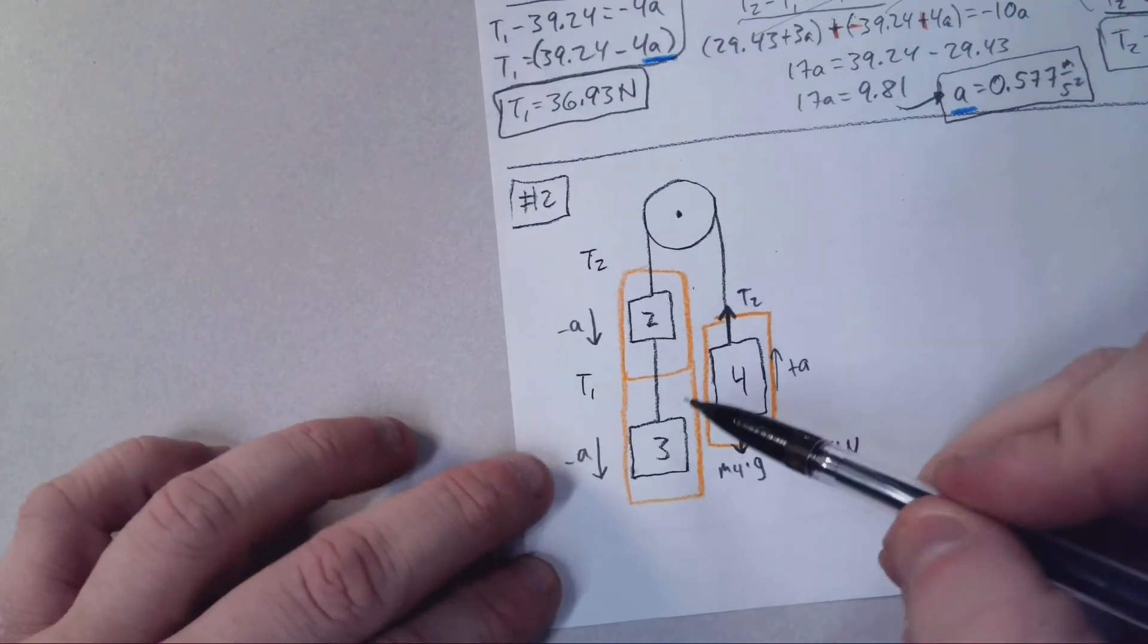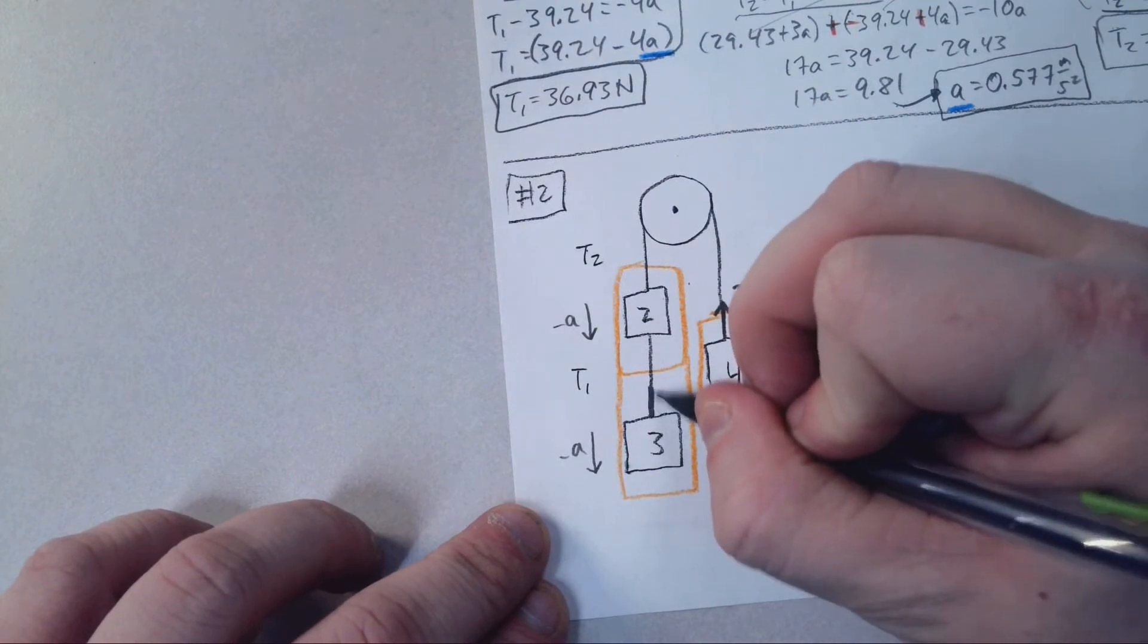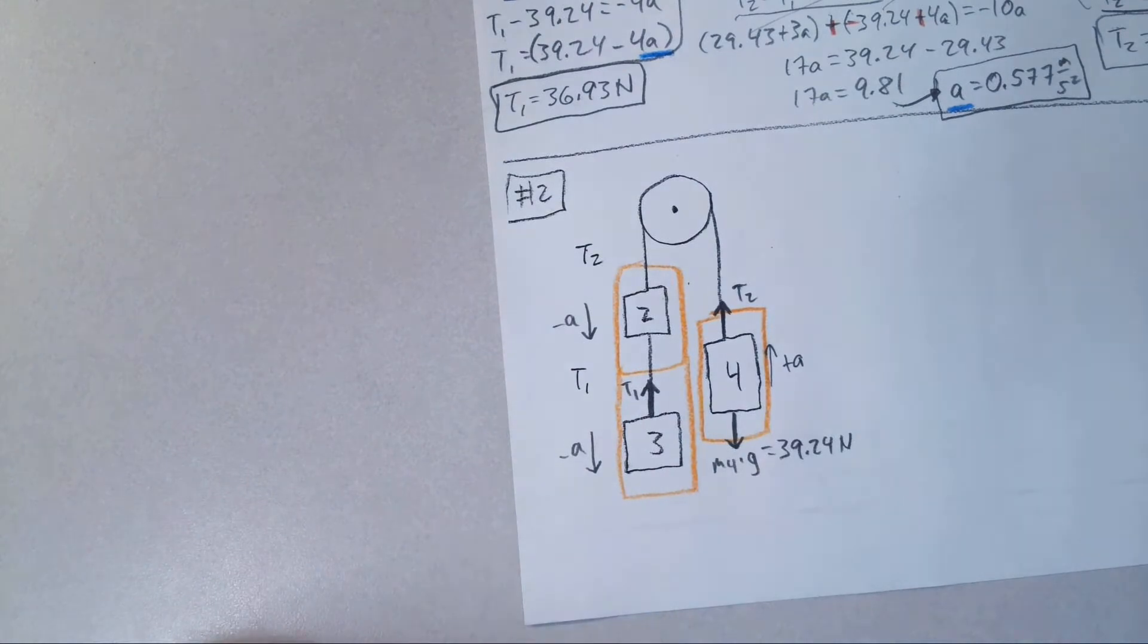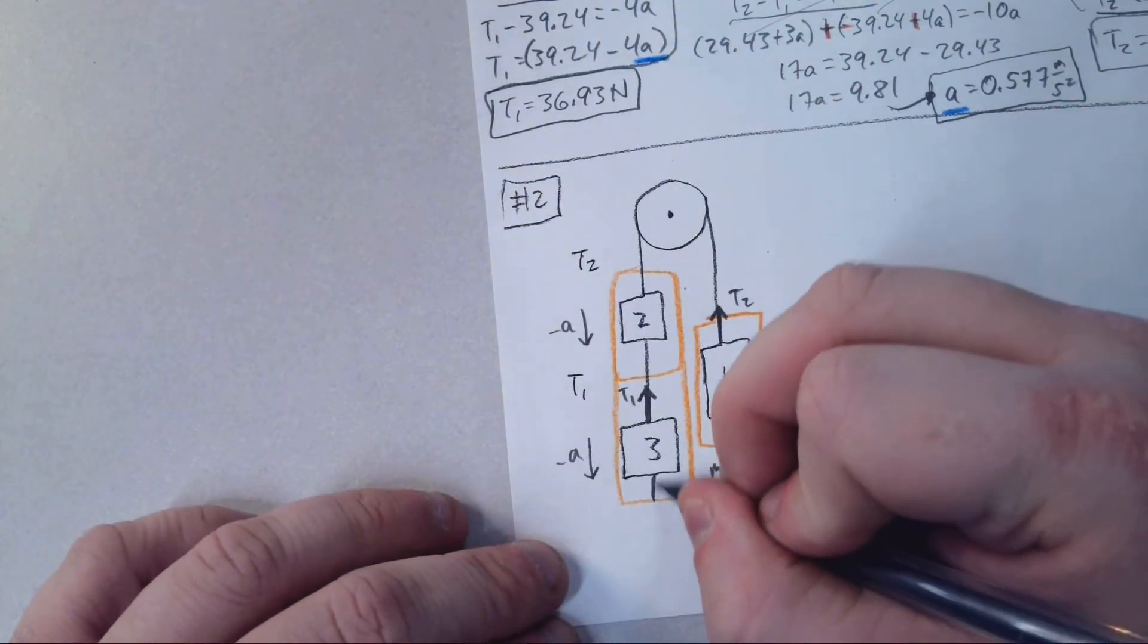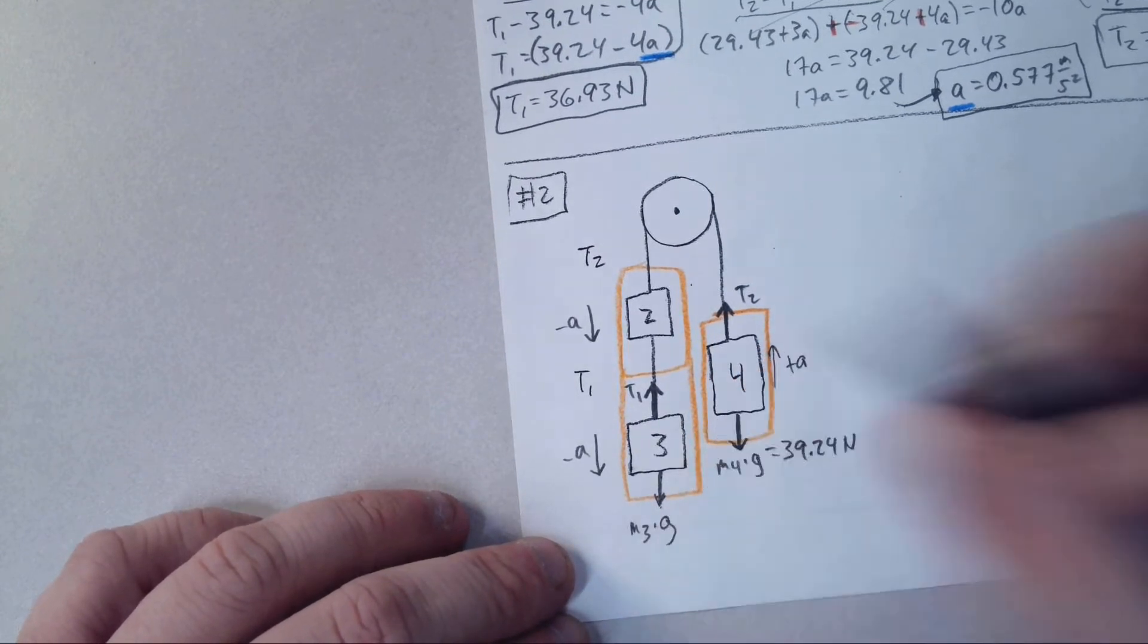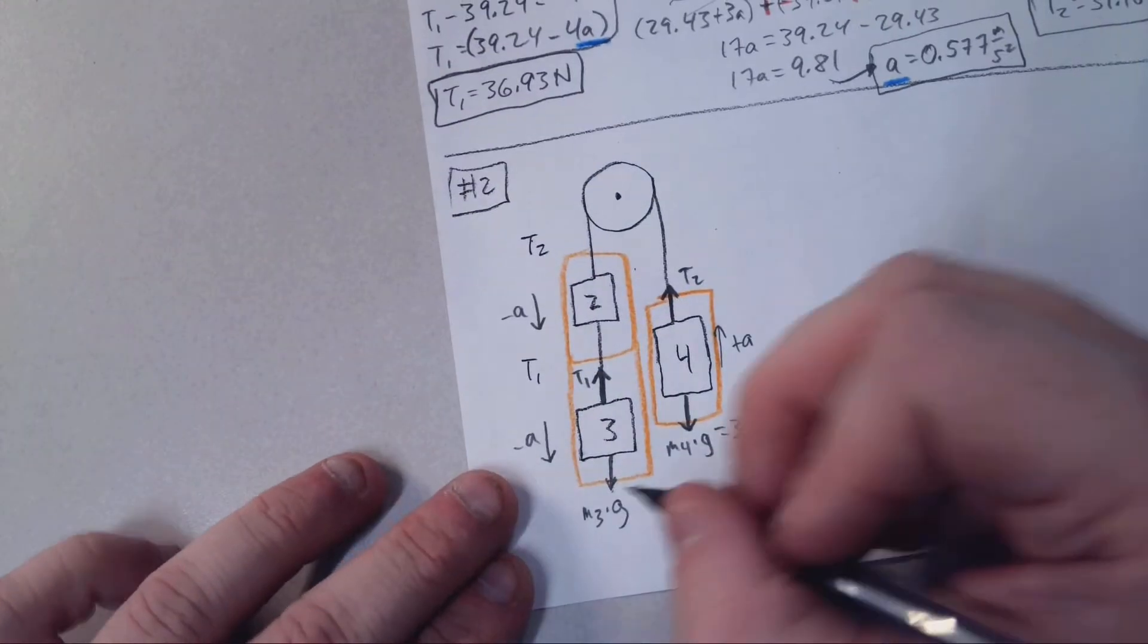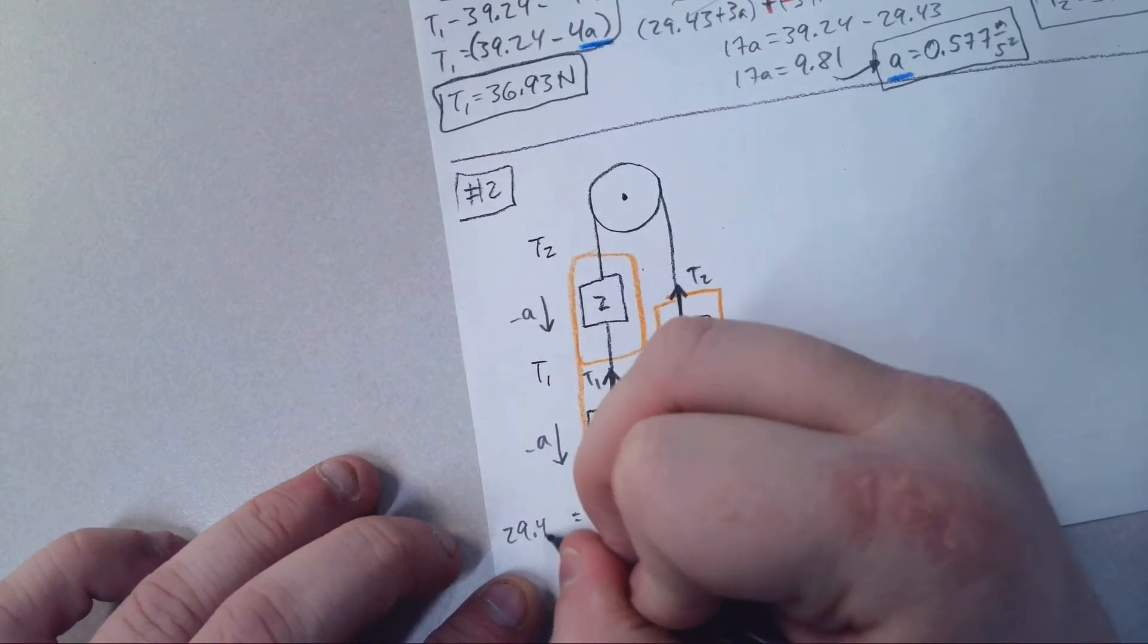We'll look at the mass three next. In order for the mass three not to fall, it needs a tension upwards, and this is T1. We also have the weight of this going downwards, which is mass three times G. This is three times 9.81, or 29.43.